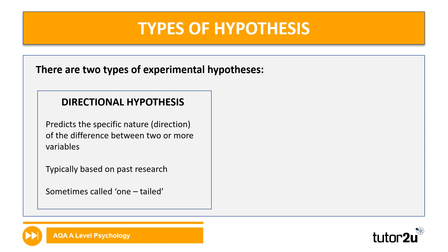We're going to talk about hypotheses in the context of experimental hypotheses, using the terms directional and non-directional. Note that these terms also apply to correlational hypotheses, which we'll look at in a later session. A directional hypothesis specifically states what the direction of results is likely to be. A directional hypothesis is usually used when there's past peer-reviewed research in the area that indicates what the direction of results is likely to be. You might also see the term one-tailed hypothesis, especially in the inferential statistics unit — one-tailed means exactly the same as directional.